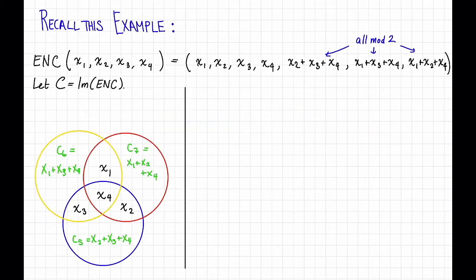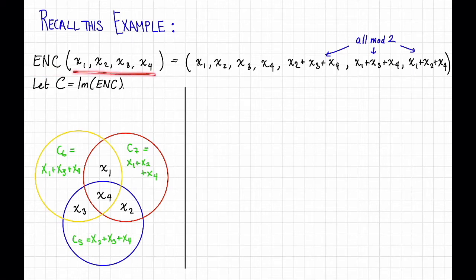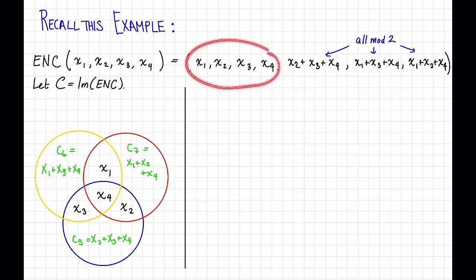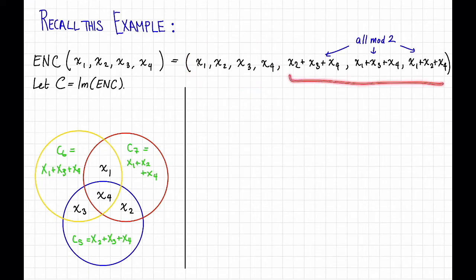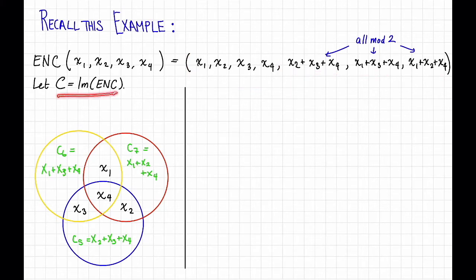Recall this example from a previous video. This is a code with message length k equals 4, block length n equals 7, over the alphabet {0, 1}. It was defined by an encoding map enc which takes four message bits x1, x2, x3, x4. The message bits appear as the first four bits of the codeword, and the last three bits are linear combinations mod 2 of the various message bits. Our code C is defined as the image of the encoding map.